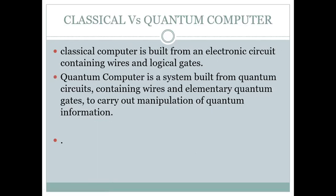Let us see the difference between the classical versus quantum computer. A classical computer, as you all know, is built from an electronic circuit containing wires and logical gates. Whereas a quantum computer is a system built from quantum circuits — instead of classical electronics, it contains wires and elementary quantum gates to carry out manipulation of quantum information. This phenomenon in reality is generated at very cold temperatures.